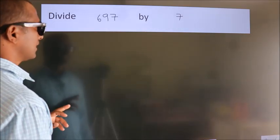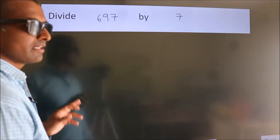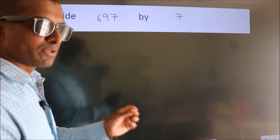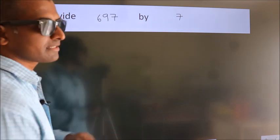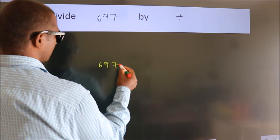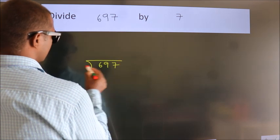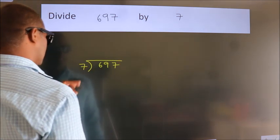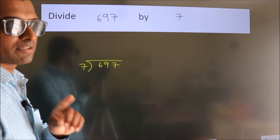Divide 697 by 7. To do this division, we should frame it in this way: 697 here, 7 here. This is your step 1.